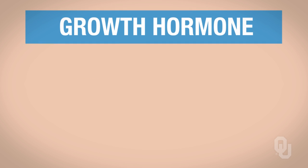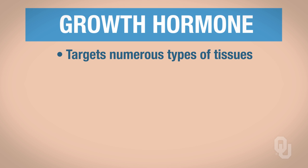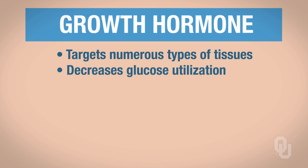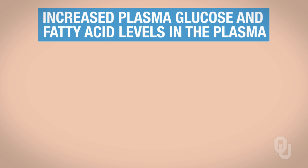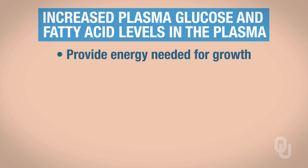Growth hormone can also target many other types of tissues, and when it does, it decreases glucose utilization. If the cells are not using up glucose, then the glucose level in circulation can remain elevated. With increased plasma glucose and increased fatty acid levels, these can all provide the energy needed for growth.